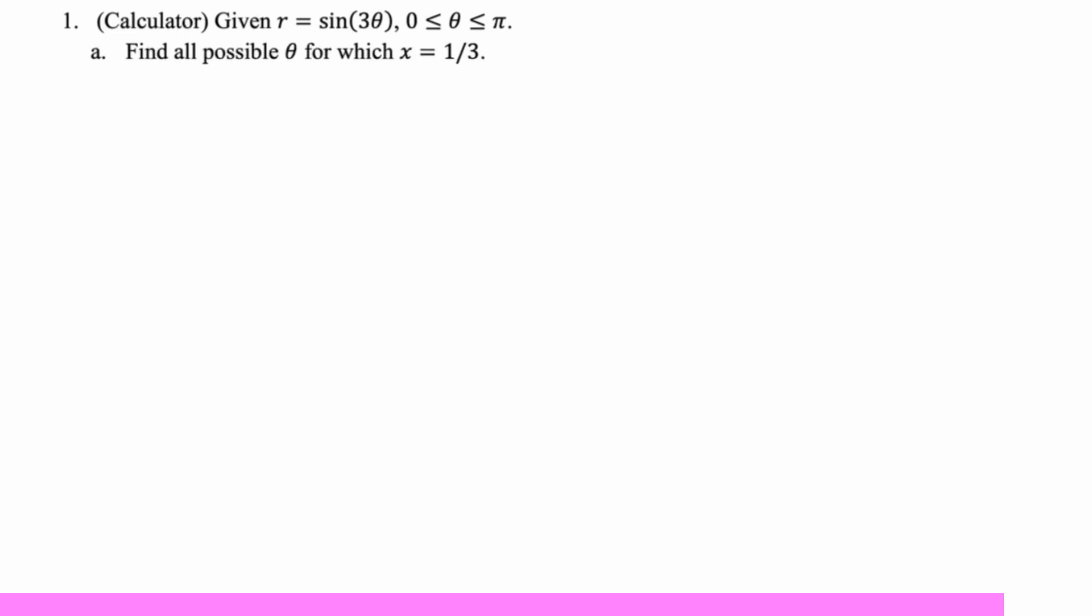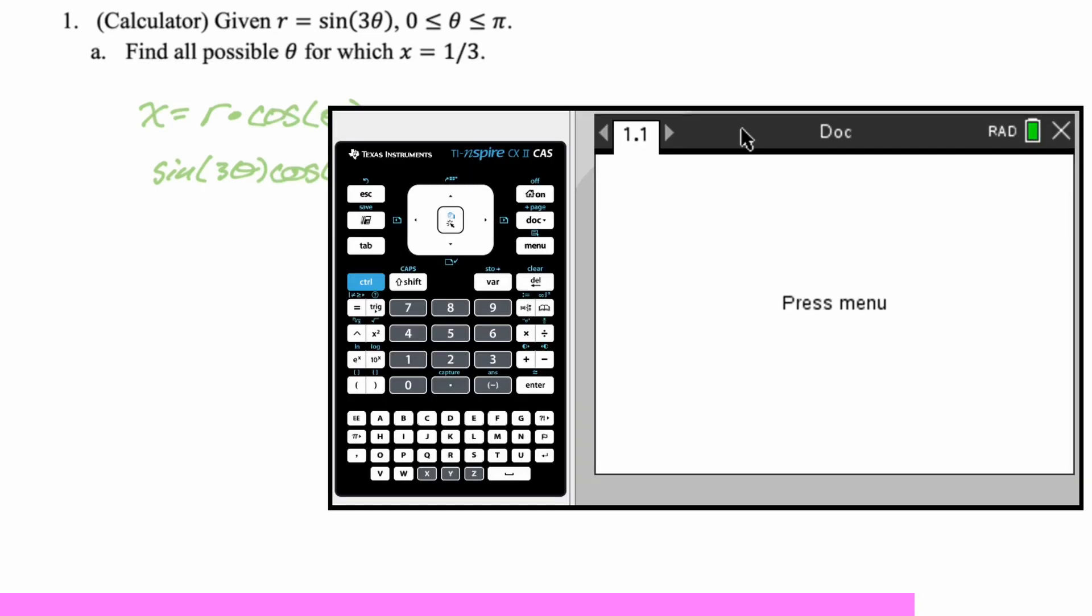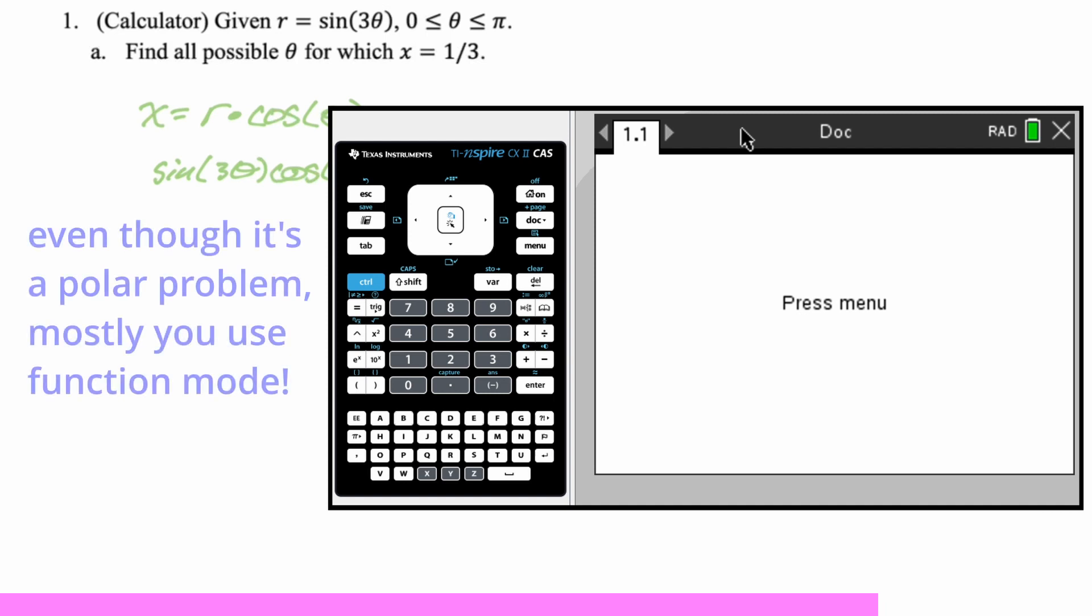We are given that r equals sine of 3 theta between 0 and pi. We want to find all possible values of theta for which x equals 1 third. This is actually a pre-calculus level question, but sometimes they ask this because a lot of people don't learn much about polar before CalcBC. So x is r cosine, y is r sine. In this case we need x equals 1 third. So we're going to say x is r times cosine of theta.